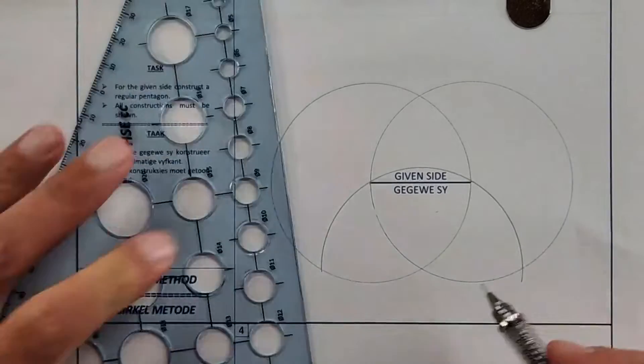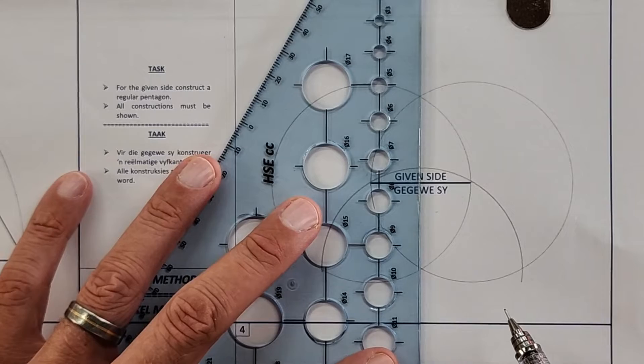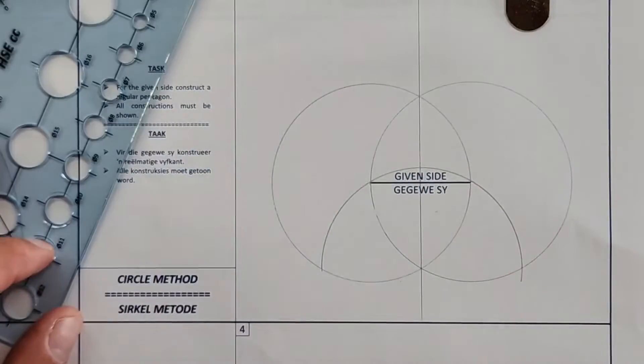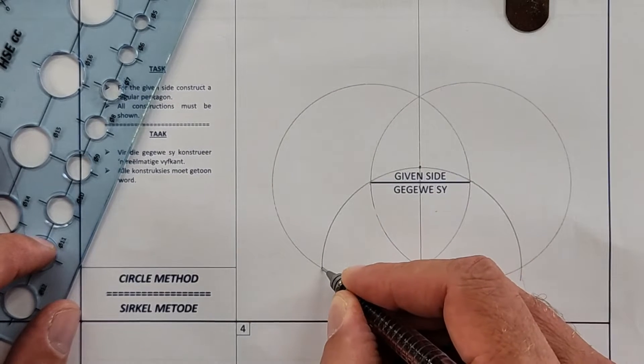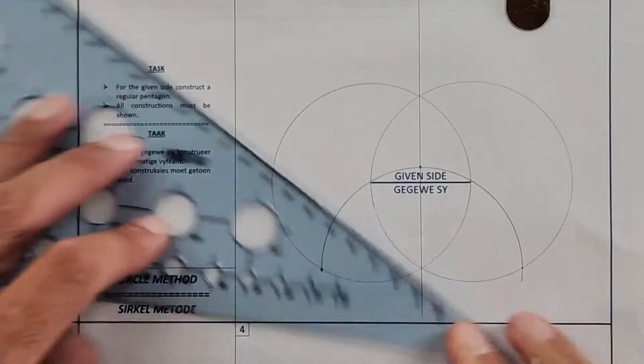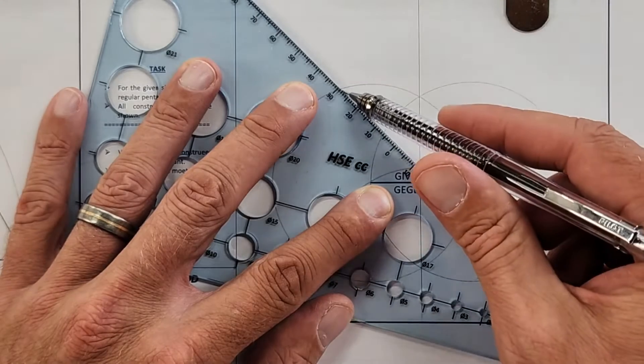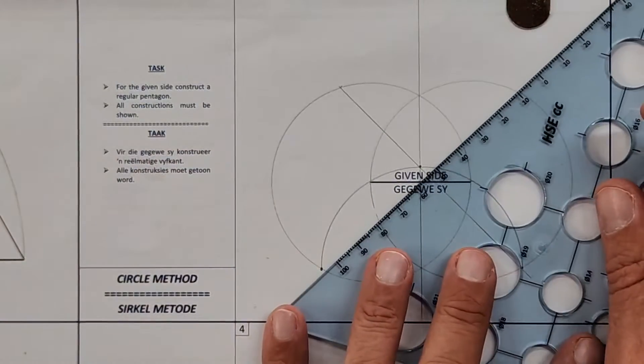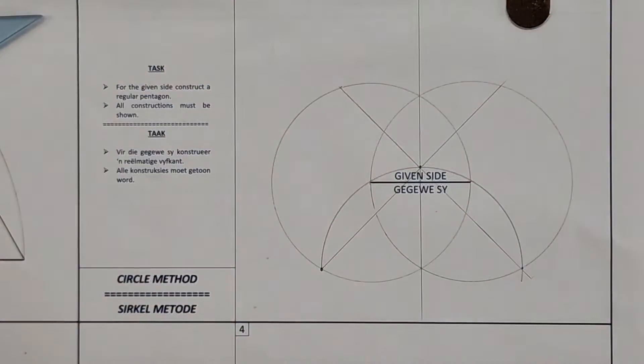Next step is, using these two points here, we're going to draw a bisector, perpendicular bisector. Alright, and then, using this point here, and these two points, construct a construction line going through, all the way to that end, you flip it, and all the way through to this end. Okay, happy?